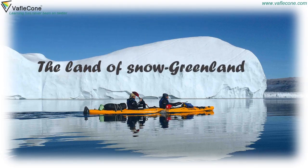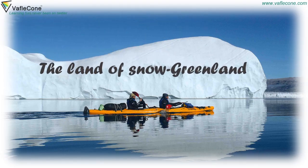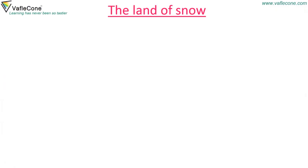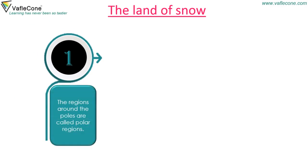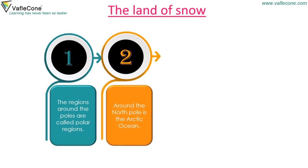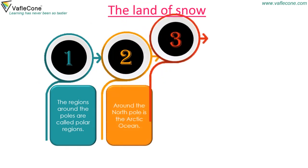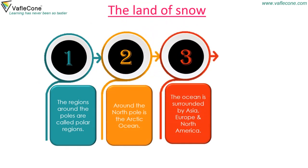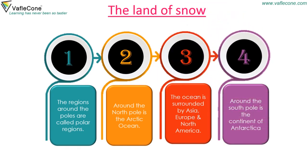The land of snow — Greenland. The regions around the poles are called polar regions. Around the North Pole is the Arctic Ocean. The ocean is surrounded by Asia, Europe, and North America. Around the South Pole is the continent of Antarctica.